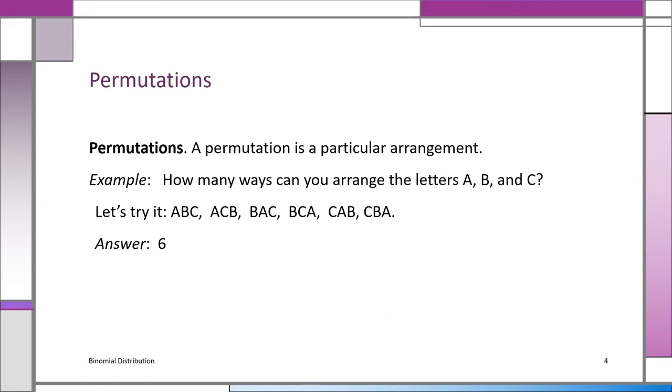Of course, they all have the same, in quotes, combination. They all have A, B, and C in them. But as a permutation, since it's arranged differently, ABC is not CBA. It's a different arrangement. So we're going to learn how to do permutations. There's a formula for that.